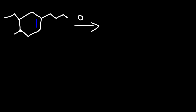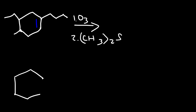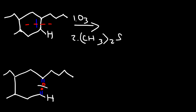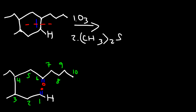Now let's try another example. Go ahead and react this molecule with ozone followed by dimethyl sulfide. I'm going to follow the same process — splitting the double bond into two parts and then adding an oxygen atom to both parts. We have a hydrogen atom here, indicating an aldehyde. Now let's count the longest chain: 1, 2, 3, 4, 5, 6, 7, 8, 9, 10 — so we have 10 carbon atoms.